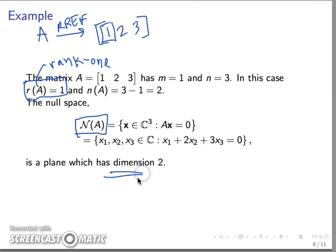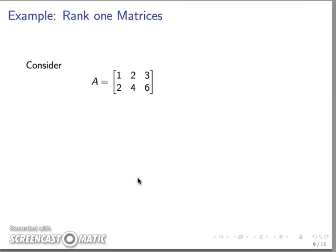It turns out that rank one matrices don't necessarily have to have one row. We create now a matrix that has two rows with the same number of columns and it's easy to see that this matrix row reduces to a matrix that has one row of zeros.